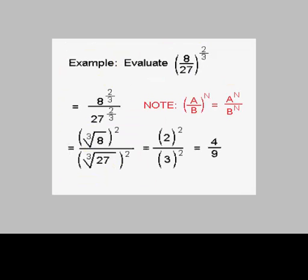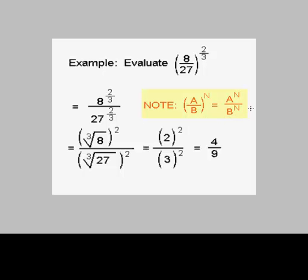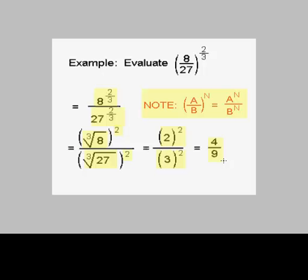In this example, we're going to raise 8/27ths to the two-thirds power. When you raise a fraction to a power, you can rewrite it as the numerator to that power divided by the denominator to that power. So we rewrite 8/27ths to the two-thirds as 8 to the two-thirds over 27 to the two-thirds. The two-thirds power means take the cube root of the number and then square it. The cube root of 8 is 2, so we get 2 squared in the numerator. The cube root of 27 is 3, so we get 3 squared in the denominator. This gives us 4 ninths.